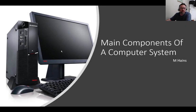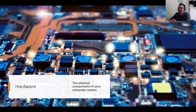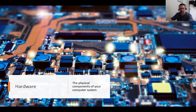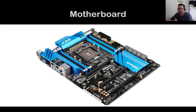Now we're going to look at what makes up your computer system — these are the main components of a computer system and we're going to concentrate on the hardware side. Remember, the hardware is the physical, tangible things you can touch, you can see them, you can grab them — although we should probably not throw them around the room.